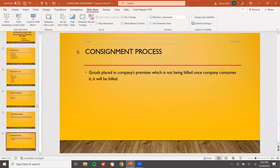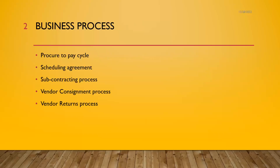For vendor returns: normally we do the purchase order, receive the material from the vendor, and if the material is not up to expectation, we send the material back to the vendor. The movement type for vendor returns is 122. Please be clear — when they ask you about a business process, first tell them the definition, then if they ask you the process, tell them the process. Don't go directly into the process without being asked.